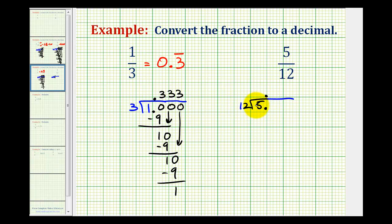Notice there aren't any twelves in five, so we add a zero here, and now we ask how many twelves are there in fifty? Well, that would be four, because four times twelve is forty-eight. Now we subtract, this is two.